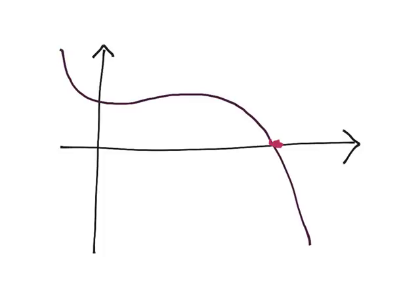Right? And where that cuts the x-axis, we go down to the graph, and we draw a tangent to that point. And the same thing. And what you see is that the points are getting closer and closer to our x-intercept.